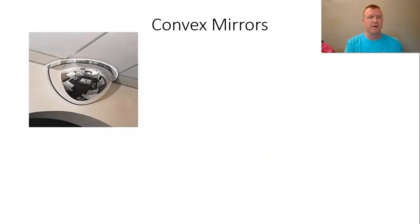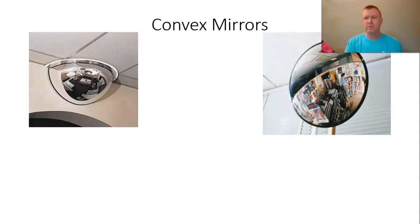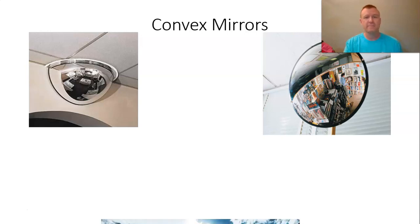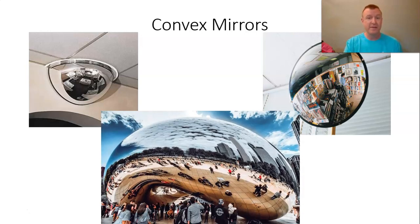Convex mirrors you see a lot in stores — this looks like it might be a jewelry store. The advantage is it gives you a wide field of vision. You also see these at corners and hallways, like hospitals and warehouses. Some people have them at the end of their driveway for an obstructed view to see traffic coming. Another example is the Bean in Chicago. Look at these images and think about what they all have in common.